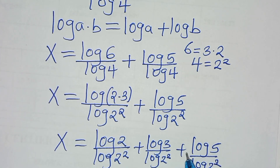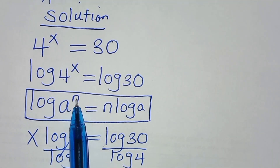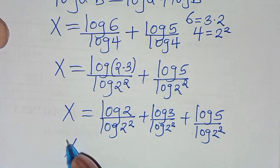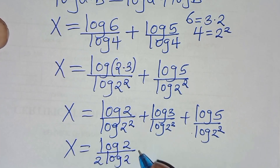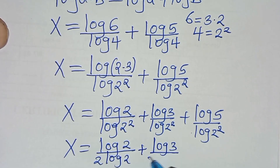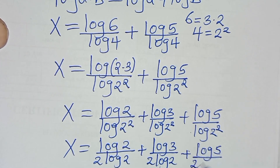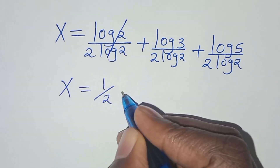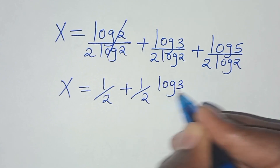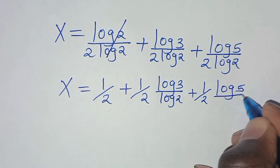Applying the power root property — that is, log(a^n) = n·log a — we get log(2²) = 2·log 2. So x becomes log 2 divided by 2·log 2, plus log 3 divided by 2·log 2, plus log 5 divided by 2·log 2. Simplifying log 2 in the first term, x equals one-half, plus one-half·(log 3 / log 2), plus one-half·(log 5 / log 2).